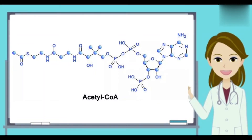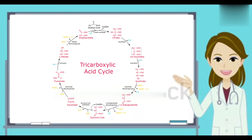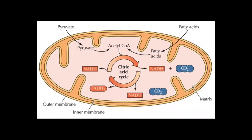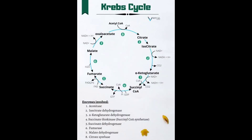Before these large molecules can enter the TCA cycle, they must be degraded into a two-carbon compound called acetyl coenzyme A. Once fed into the TCA cycle, acetyl coenzyme A is converted into carbon dioxide and energy. In glycolysis there were 10 steps and 10 different enzymes; likewise, here in the Krebs cycle there are 8 steps and 8 different enzymes.